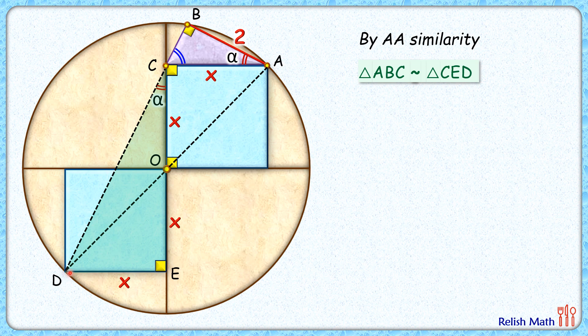As the triangles are similar, thus the ratio of corresponding sides will be equal, or AB upon BC will be equal to CE upon ED. Now AB length, that is 2 centimeters. BC is unknown.